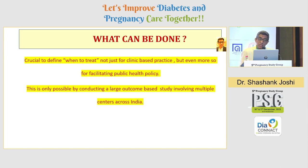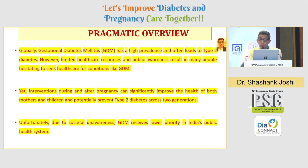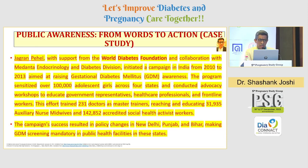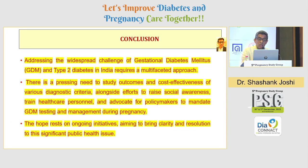What can be done? It is crucial to define when to treat — not just based on clinical practice but to facilitate public policy. We need outcome-based studies from multi-centres. We definitely need a pragmatic view — we need to intervene and hit two or three generations. The societal awareness of GDM is a very low priority in the healthcare system. The Jagriti Pehal campaign from WDF is a very good example of GDM awareness, making GDM screening mandatory for public health facilities in New Delhi, Punjab, and Bihar.